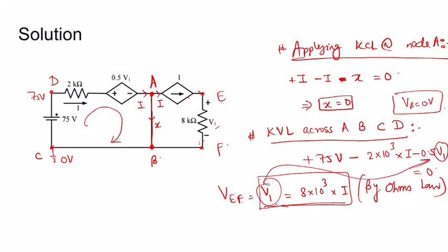So putting this value of V1 here, we get 75 minus 2000i minus 0.5V1, which is minus 0.5 into 8 into 10 to the power 3 into i.